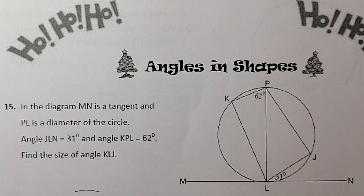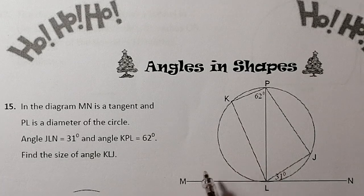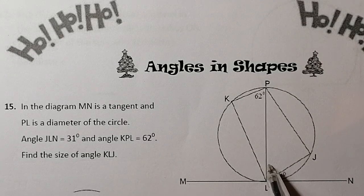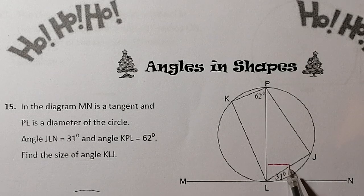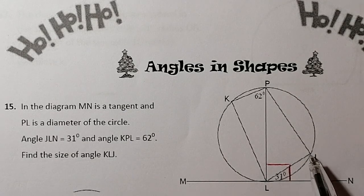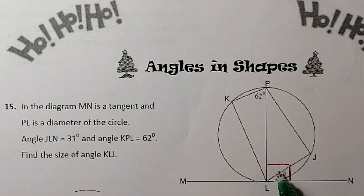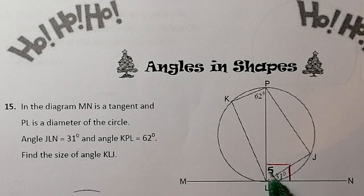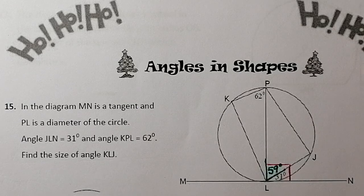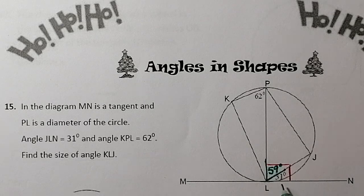Let's get started. First of all, I'm going to use the property of the tangent. I know that the tangent MN is going to meet the line PL, which is the diameter, at right angles. So if I think about this being a right angle, I've already used up 31 degrees of this part of the angle. To work out the remaining part, I do 90 minus 31, which leaves me with 59 degrees. So that angle there is 59 degrees. That's the tangent-to-circle property — they meet at right angles, so these two angles add up to 90 degrees.